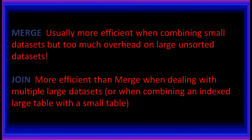MERGE is usually more efficient when combining small datasets, but has too much overhead on large unsorted datasets. JOIN is more efficient than MERGE when dealing with multiple large datasets, or when combining an indexed large table with a small table.